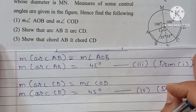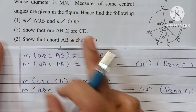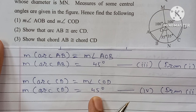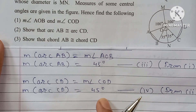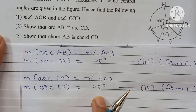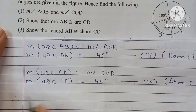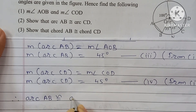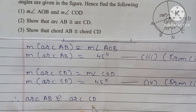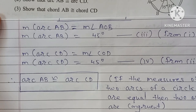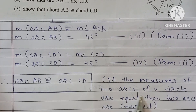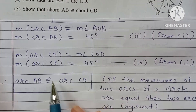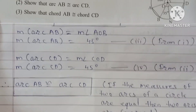Since the measurement of arc AB is 45 degrees and the measurement of arc CD is also 45 degrees, if the measures of two arcs of a circle are equal then the two arcs are congruent. Therefore arc AB is congruent to arc CD.